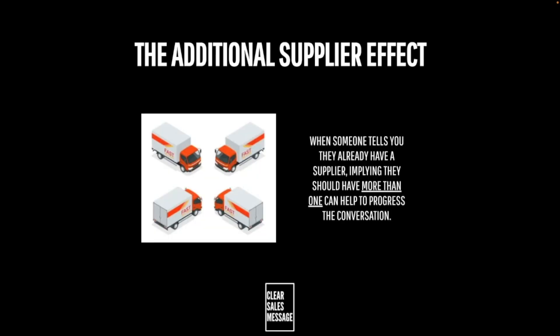How can you use it? Quite simply, next time you're faced with the incumbent supplier objection — 'we already have somebody for that, thanks very much' — remember to ask them who else supplies them and see how that moves the conversation forward. That's the additional supplier effect: when someone tells you they already have a supplier, if you imply they should have more than one supplier for that service, it can really help to progress the conversation.